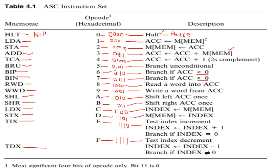The ADD instruction adds data of the accumulator with the data of any memory location or register. The result of this addition is saved back into the accumulator. So data will be added and the result will be stored or saved in the accumulator.